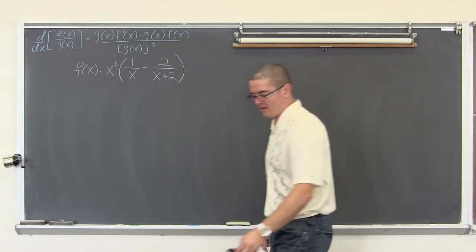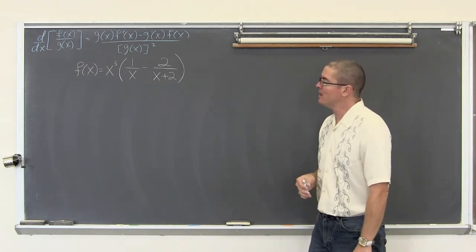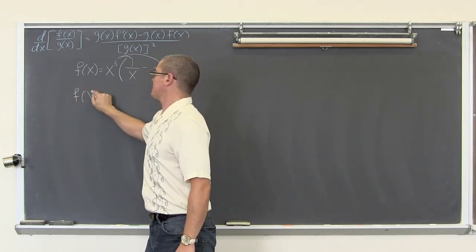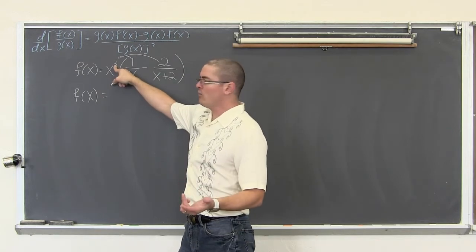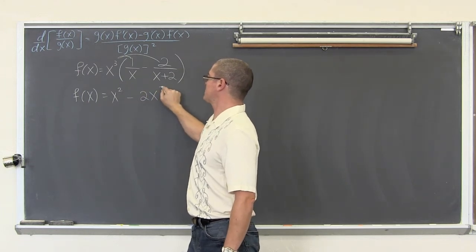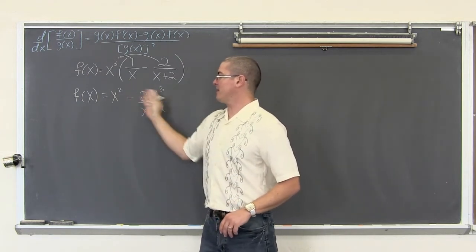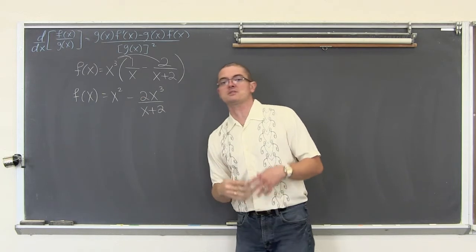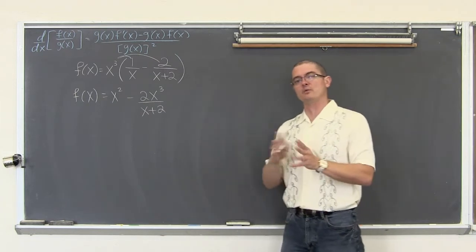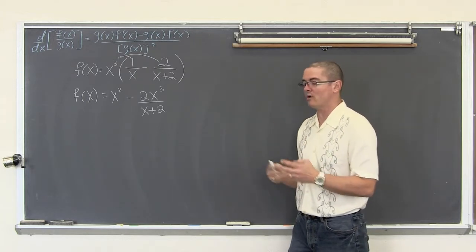For our next example, if I left it in its original form it would be a lot of work to find the derivative. So I am going to take the x to the third power and distribute it through the parenthesis to get f of x equal to x squared minus 2x to the third over x plus 2. We can find the derivative of each individual term separately and then leave it in subtraction form or simplify.